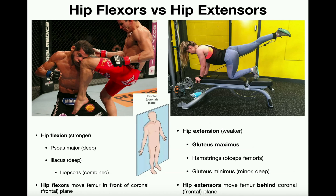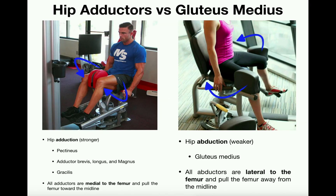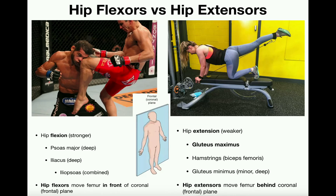Hip extension is anytime you bring the femur more in the direction behind the frontal plane. To summarize, learn these muscles as antagonistic pairs: adduction versus abduction, and hip flexion versus hip extension. Hopefully you got a lot out of this video — please like and subscribe for future videos.